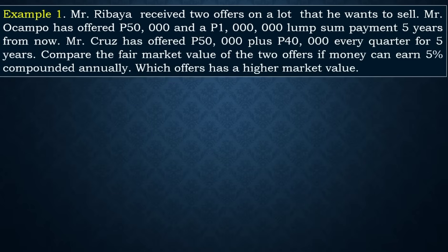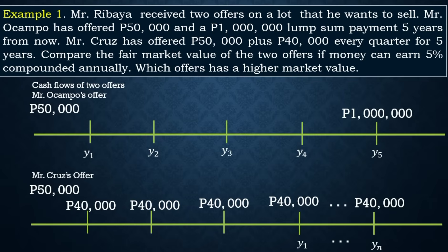For example, Mr. Ribaya received two offers on a lot he wants to sell. Mr. Ocampo offered 50,000 as a down payment and a one million lump sum payment five years from now. Mr. Cruz offered 50,000 pesos plus 40,000 every quarter for five years. We need to find the cash flows of both offers — Mr. Ocampo has a 50,000 down payment and one million after five years.